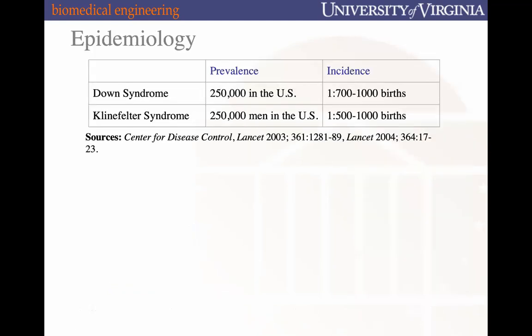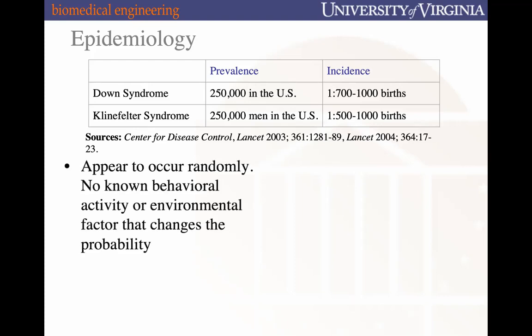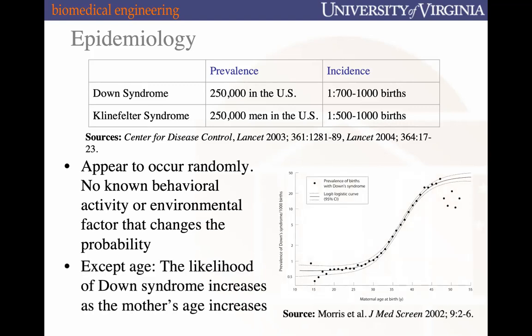Both syndromes share similarities in prevalence and incidence — approximately a quarter of a million people in the U.S., with rates of 1 in 500 to 1 in 1,000 births per year. They appear to occur randomly with no known behavioral or environmental factors changing their probability. The only identified connection is age: for Down syndrome, increased maternal age raises likelihood; for Klinefelter syndrome, increased paternal age raises likelihood.